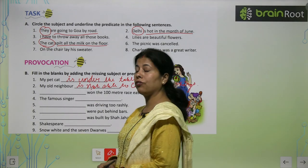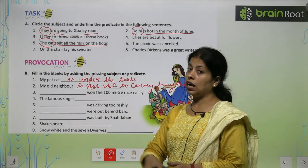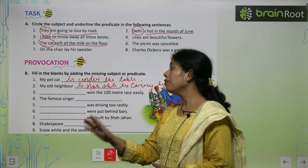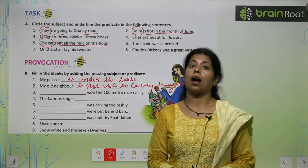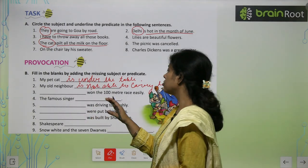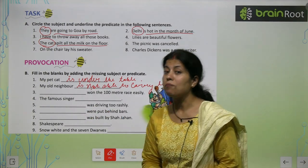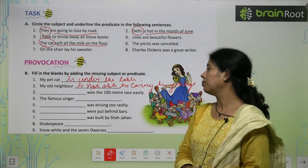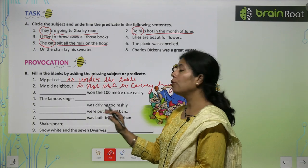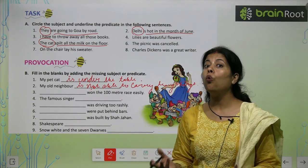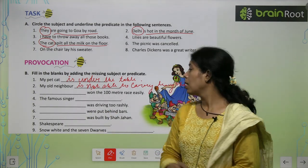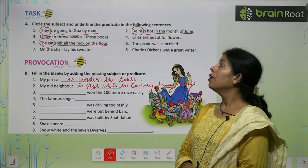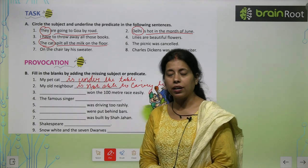Dash won the hundred meter race easily — He won the hundred meter race easily. The famous singer had sung my song. Dash was driving too rashly — The man was driving too rashly. Rashly dash were put behind bars — Criminals were put behind the bars. So like this we have to add subject and predicate.